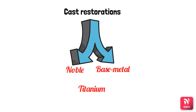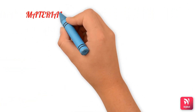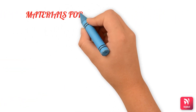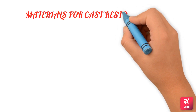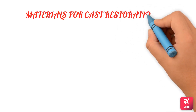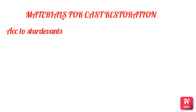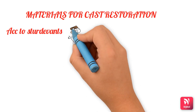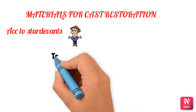Now we'll see the materials for cast restorations. According to usage, we use traditionally high gold alloys, low gold alloys, platinum-silver alloys, and base metal alloys.